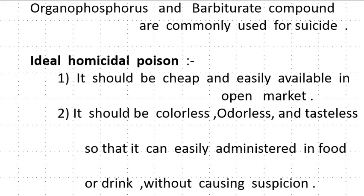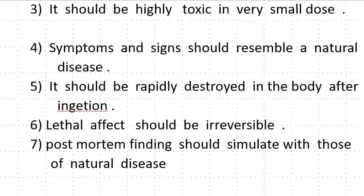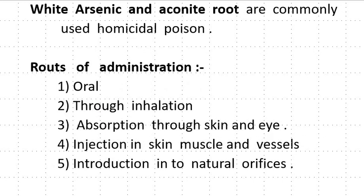Ideal Homicidal Poison — the features of an ideal homicidal poison are: it should be cheap and easily available on the open market; it should be colorless, odorless and tasteless so that it can easily be administered in food or drink without causing suspicion; it should be highly toxic in very small doses; symptoms and signs should resemble a natural disease; it should be rapidly destroyed in the body after ingestion; lethal effect should be irreversible; and post-mortem findings should simulate those of a natural disease.